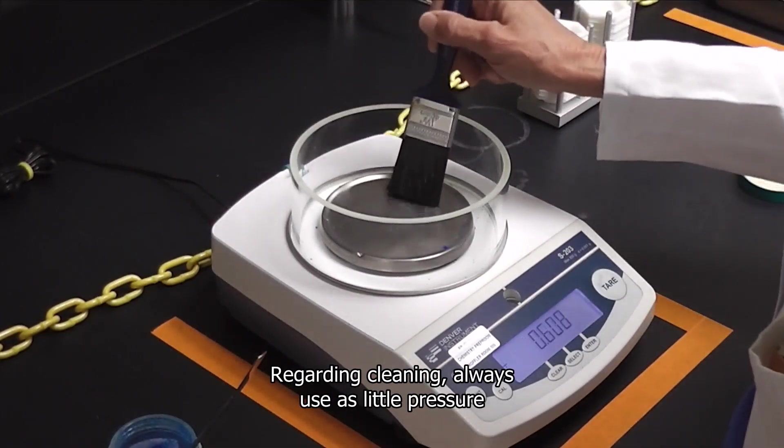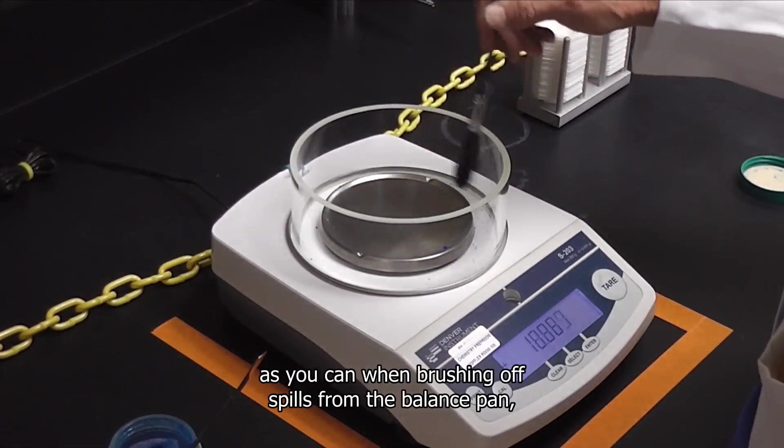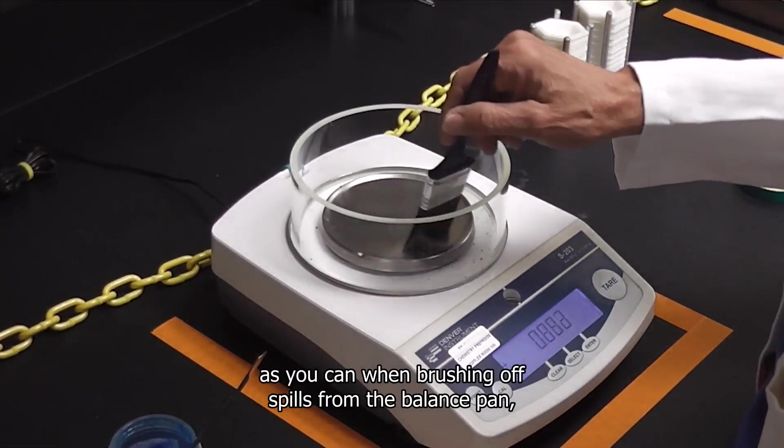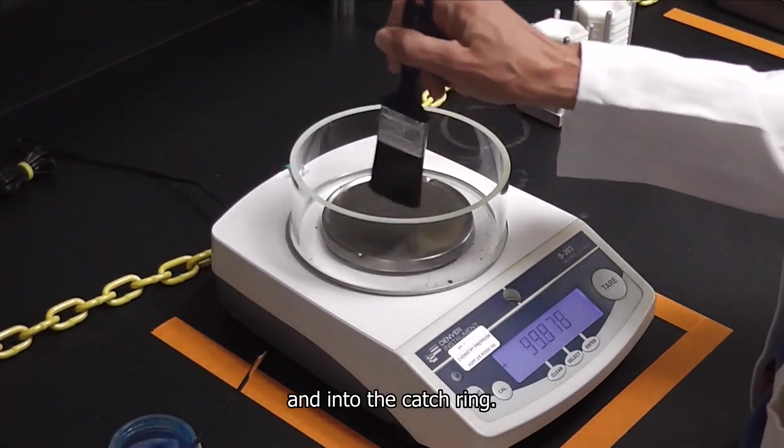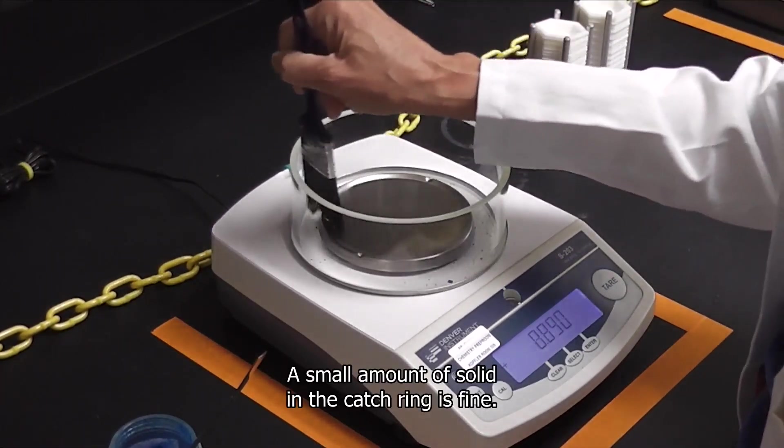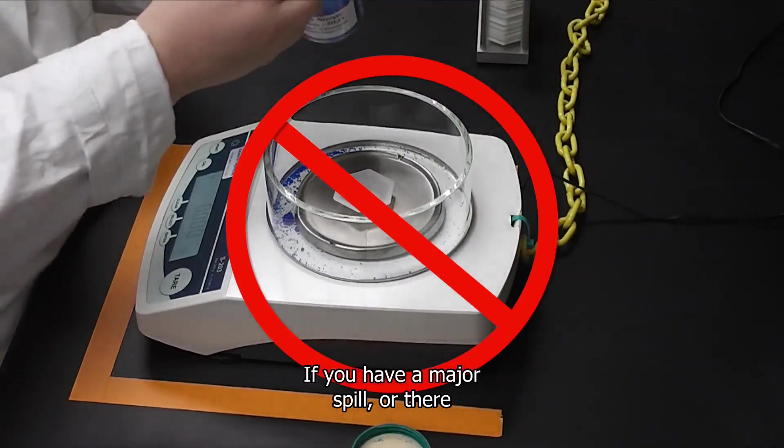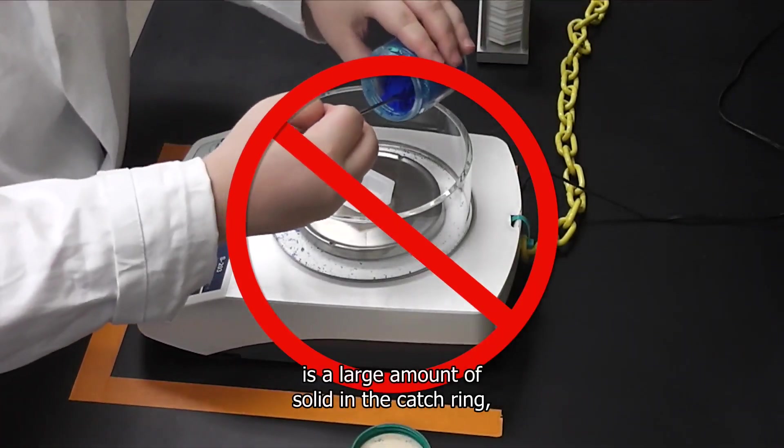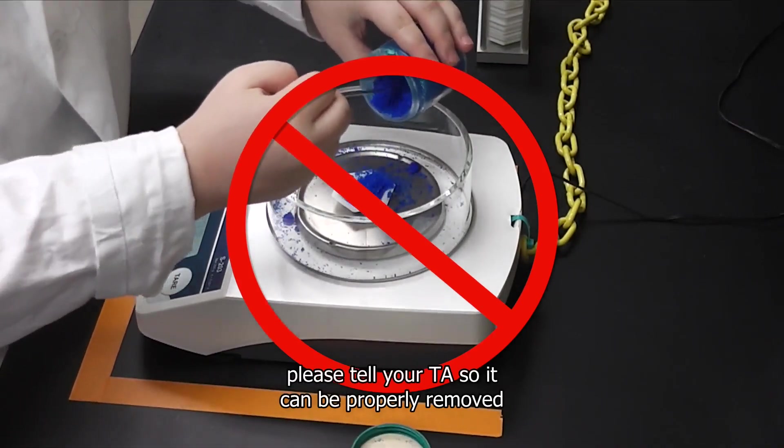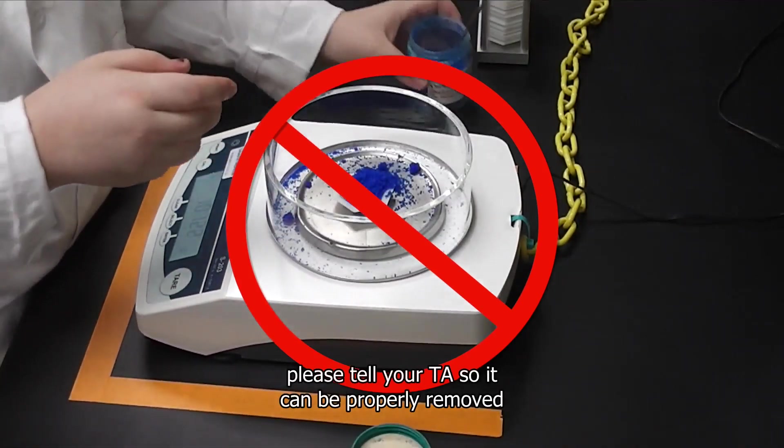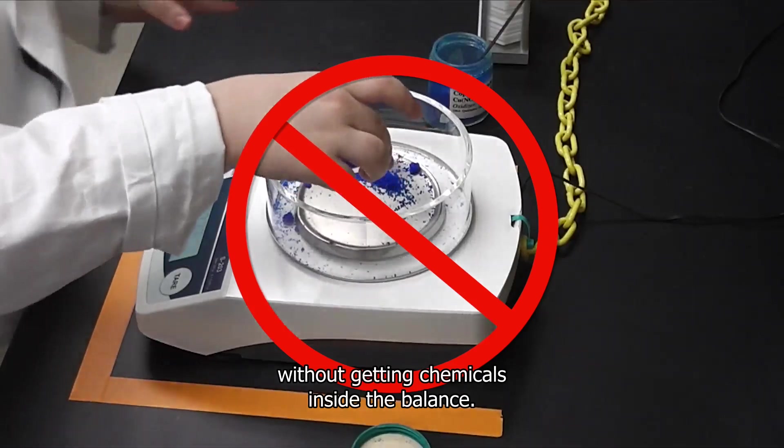Regarding cleaning, always use as little pressure as you can when brushing off spills from the balance pan and into the catch ring. A small amount of solid in the catch ring is fine. If you have a major spill or there is a large amount of solid in the catch ring, please tell your TA so it can be properly removed without getting chemicals inside the balance.